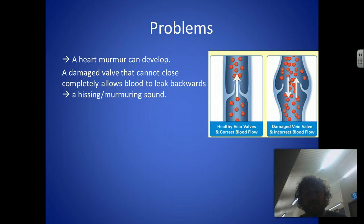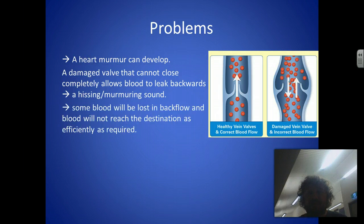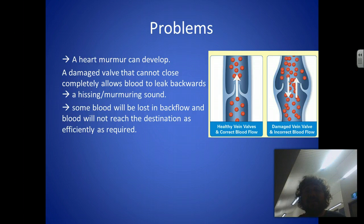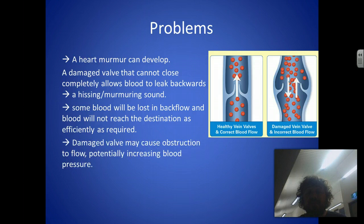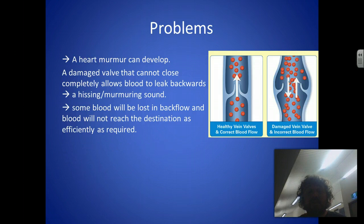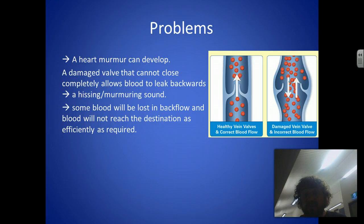Look that up on YouTube — you'll be able to find examples of what a heart murmur sounds like. So some blood is going to be lost in backflow, and this blood won't reach its destination as efficiently as required. That can result in all sorts of problems: you might not get enough oxygen to where you need it, you might not get enough nutrients to the cells that need it, and this could cause atrophy, which is where the cells start to die off.